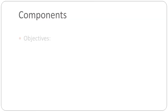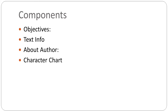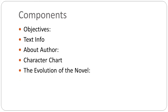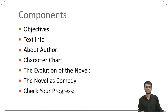Now let's look at the components. First we'll discuss objectives, then text information, author information, the character chart of the novel, the evolution of the novel, the novel as a comedy, and check your progress. The last point will be discussed as well.